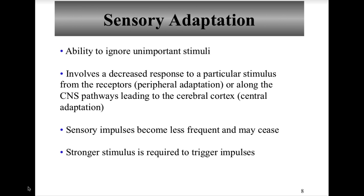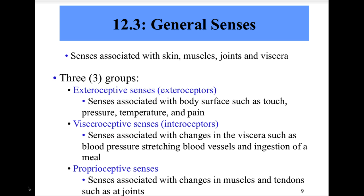In section 12.3 on the general senses, our objectives are to describe the differences among receptors associated with touch, pressure, temperature, and pain; describe how the sensation of pain is produced; and explain the importance of stretch receptors in muscles and tendons. The general senses are associated with skin, muscles, joints, and viscera, where sensory receptors initiate impulses to the brain and spinal cord.